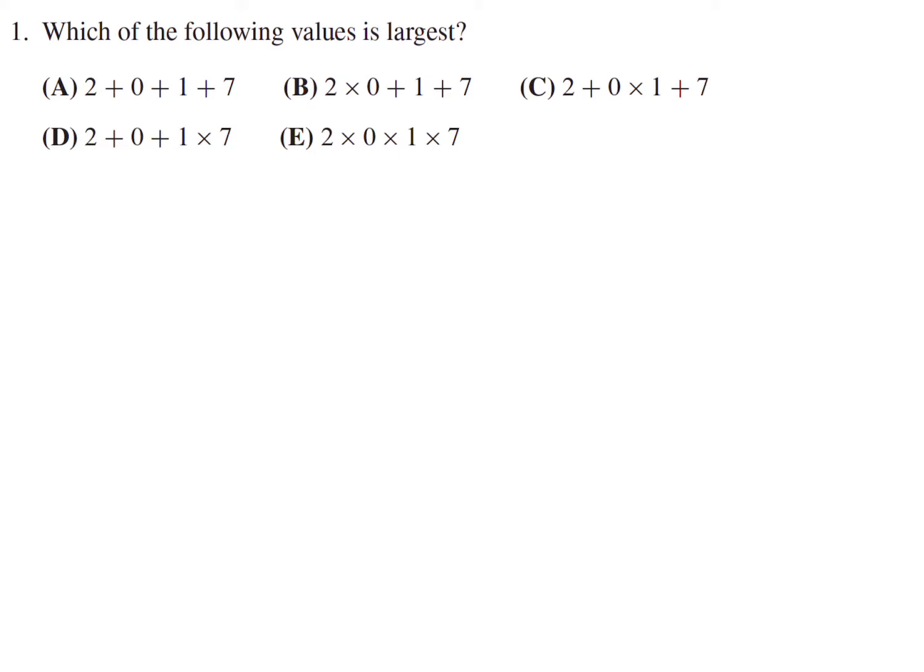Which of the following is the largest? Let's calculate each of these individually. A looks like 10, B is 8, C is 9, D is also 9, and E is 0. So the largest obviously is A for number 1.